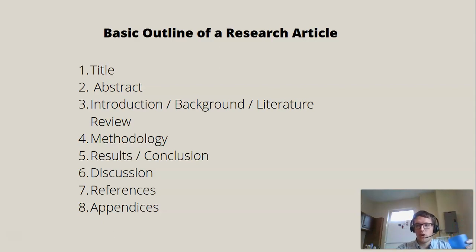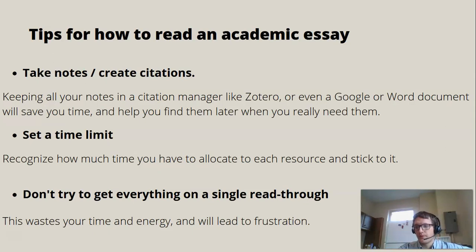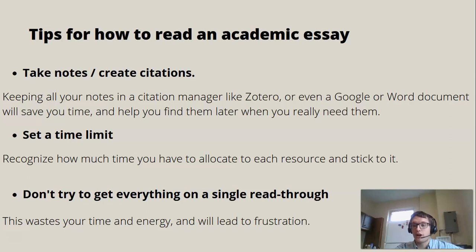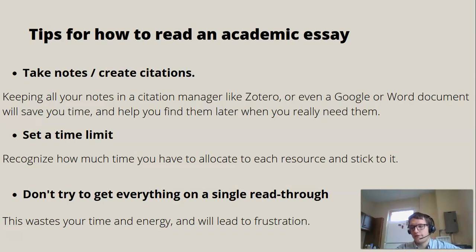As probably most of you are realizing, academic journals are not the most riveting things to read. They are often packed with jargon, technical terminology, and dry, dispassionate, objective accounts of different research methodologies and conclusions. It's very easy to become discouraged or bogged down while trying to read them. I've read hundreds of these articles, and often about halfway through I'll arrive at a point where I realize I no longer understand what the article is saying. But it's what will most likely happen if you don't develop a clear methodology for how to quickly and efficiently read a research paper.